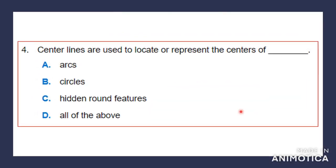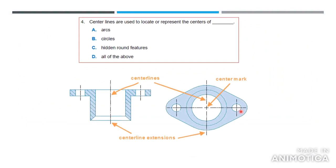Question four: center lines are used to locate or represent — A: axes, B: circles, C: hidden round features, or D: all of the above. The answer is all of the above. As you can see in the drawing, center lines appear throughout and are used to represent the center of various shapes — axes, circles, or anything else where you need to find the center.